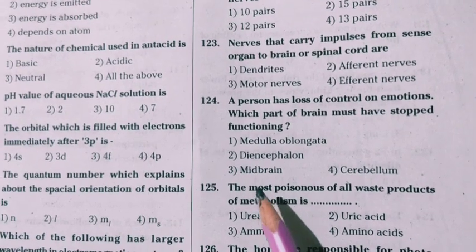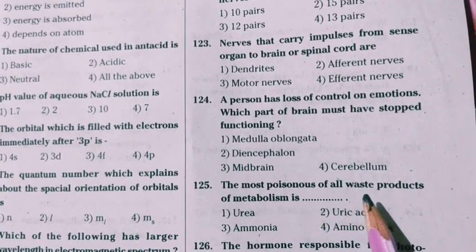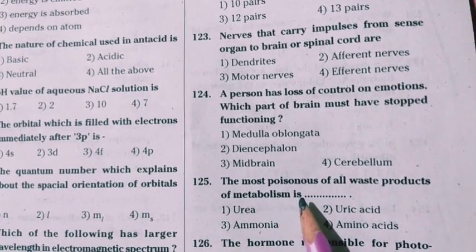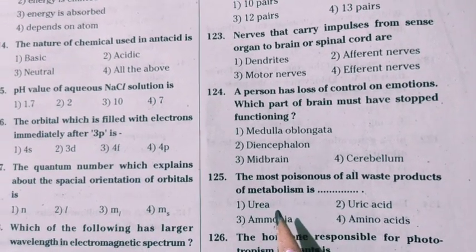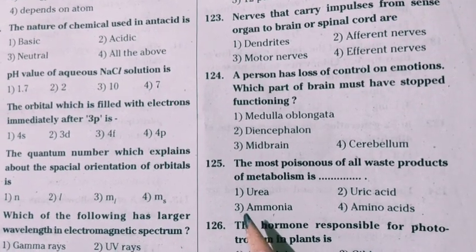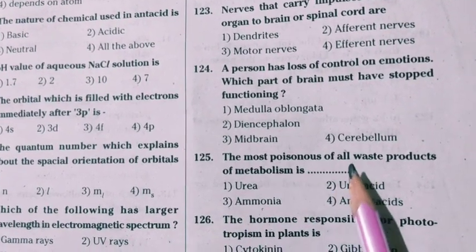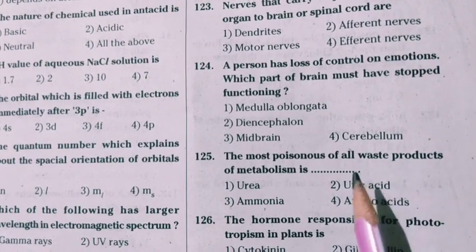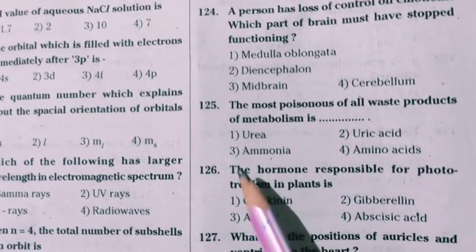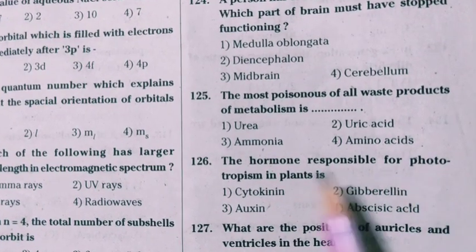Next question: the most poisonous of all waste products of metabolism. Among the waste products of metabolism, ammonia is the most poisonous of all waste products of metabolism.